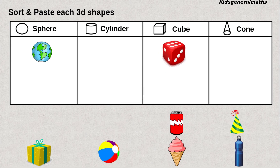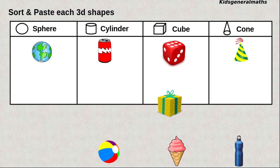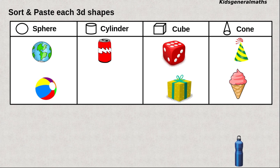Next can. So it looks like what shape? It looks like cylinder shape. So we are going to paste in cylinder. Next birthday cap. It looks like cone. Next birthday party gift. So it looks like what shape? It looks like cube. Next ball. So the shape of ball is sphere. Next ice cream. So the shape of ice cream is cone. Next water bottle. So the shape of the bottle is cylinder.